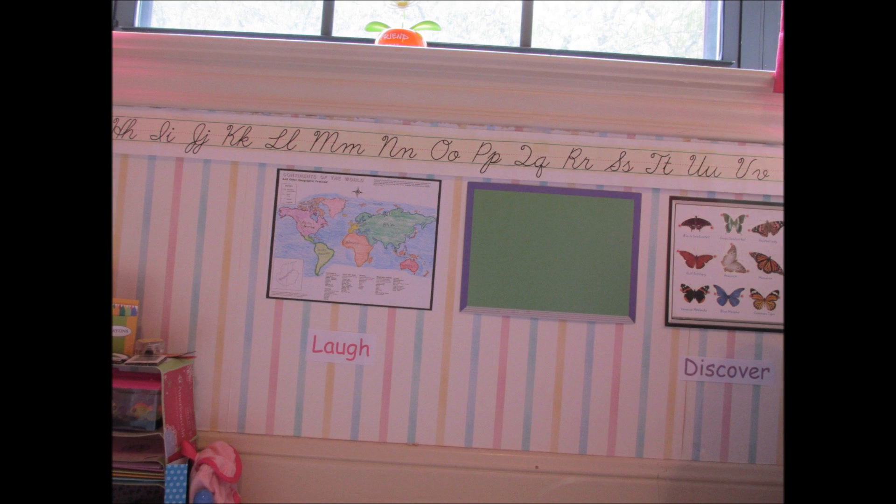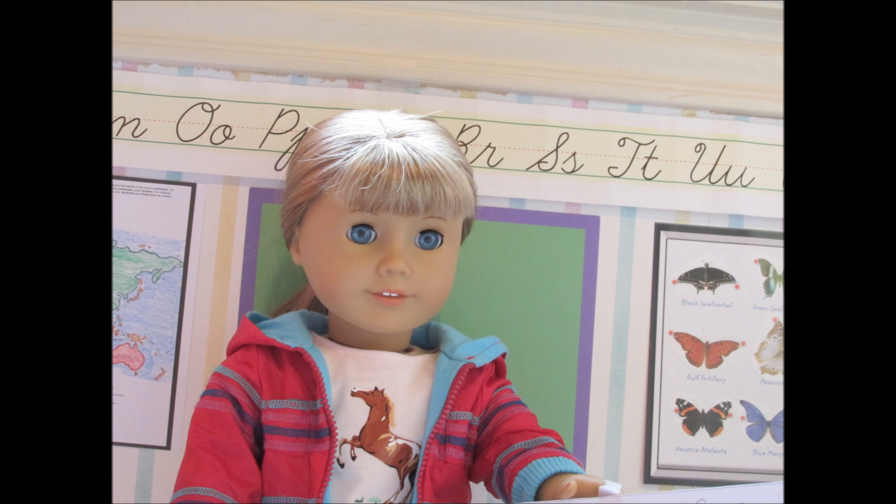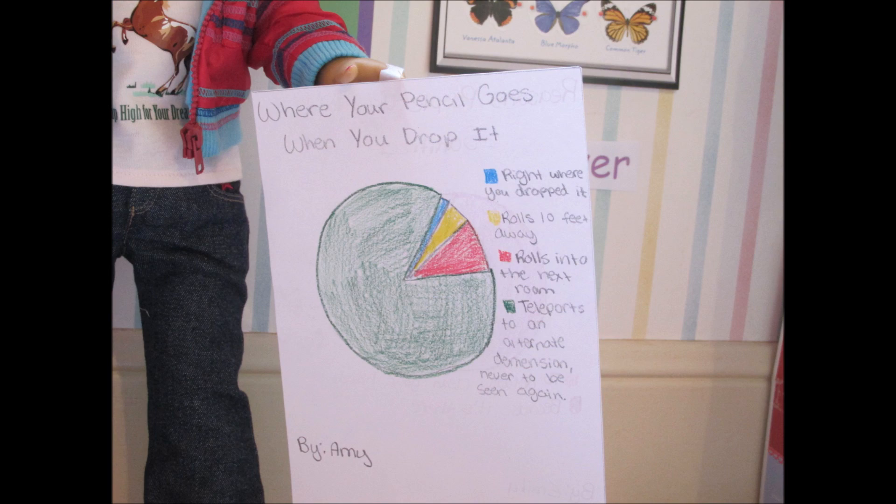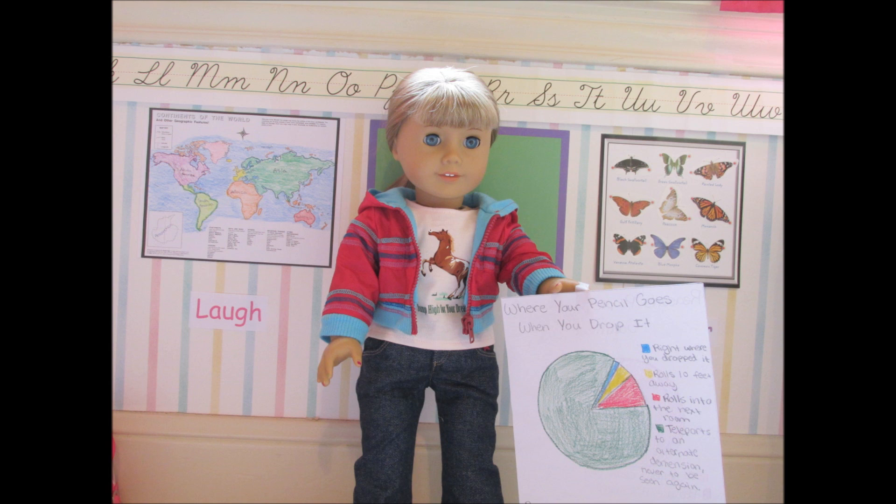Next up is Amy. My project is over where your pencil goes when you drop it. Blue is right where you dropped it, yellow rolls 10 feet away, red rolls into the next room, and green teleports to an alternate dimension never to be seen again. Here's the graph. Thanks.